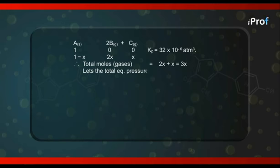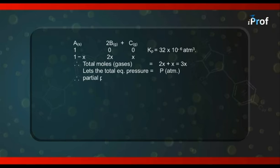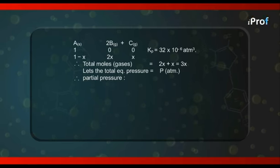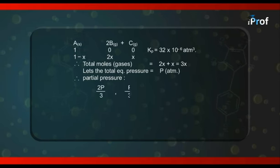Let the total equilibrium pressure for this reaction is equal to P atmosphere. Therefore, partial pressures of the gases involved shall be, for B it will be 2P by 3 and for C it will be only P by 3 because partial pressure is mole fraction into total pressure.